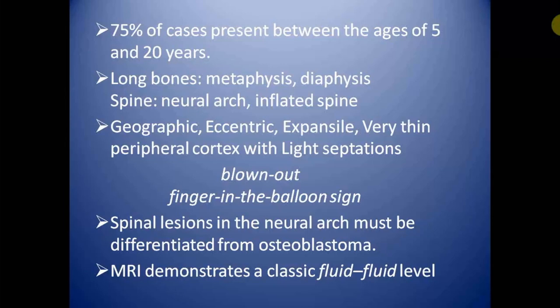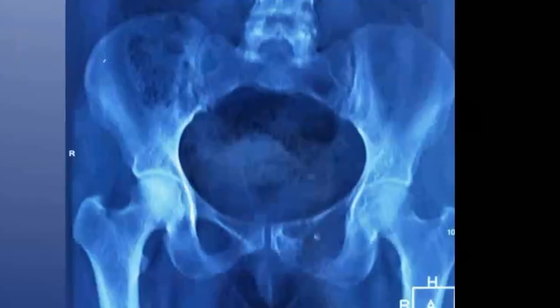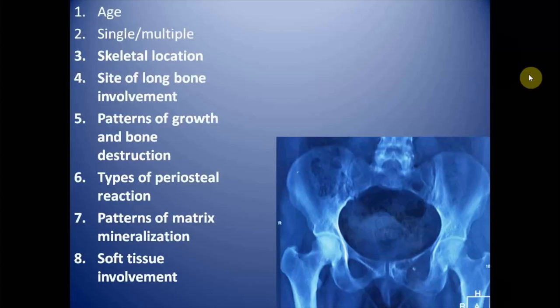This is the case of a 45-year-old female who presented with swelling in the region of the gluteus and greater trochanter for two months. This is the frontal radiograph of the pelvis covering both hip joints and we will review this lesion on the basis of systematic subheadings.